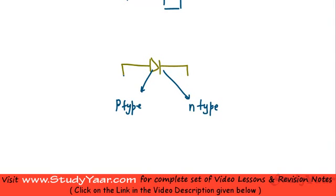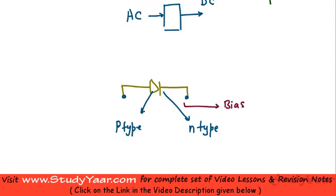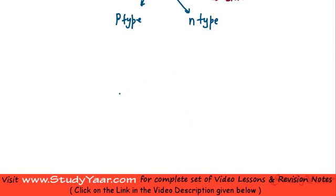Now, the voltage that is applied across the diode is known as your bias. A diode is basically operated either in forward bias or in reverse bias.